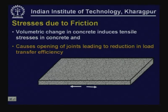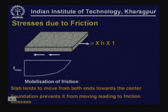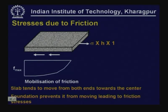Volumetric change would also cause opening of joints leading to reduction in load transfer efficiency. When a slab tries to contract, the outermost part moves the maximum and the central part moves the least. So the friction mobilized towards the end of the slab is going to be more, and towards the center almost zero friction is mobilized. Normally we try to get an average value of friction that is going to be mobilized, and that is the value used in the analysis of the slabs.